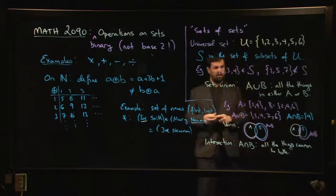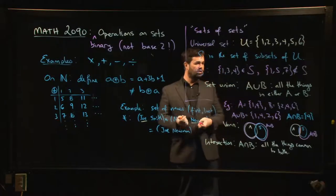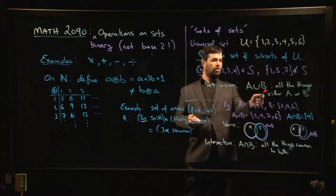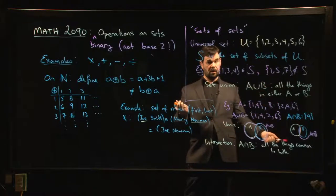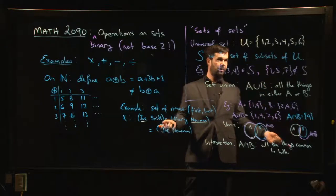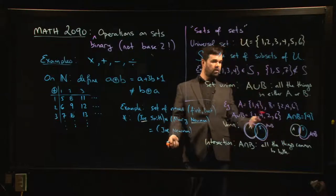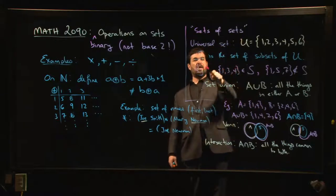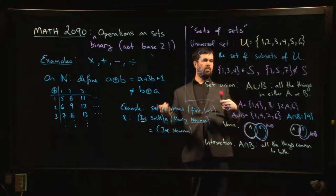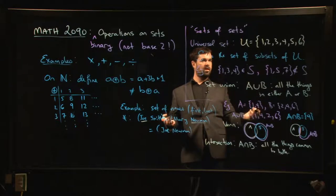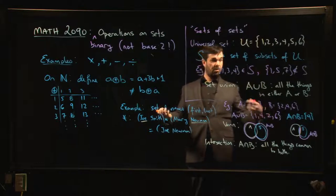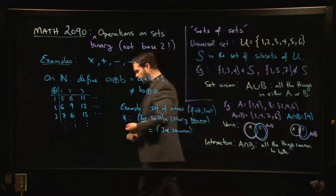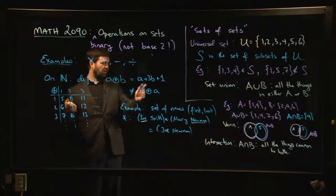So these are also binary operations in the sense that you take two things as an input - in this case the two things are sets - and you get another thing as an output, in this case another set. And you'll notice if you're doing unions and intersections and you're working in this kind of scenario where you're working with subsets of some universal set, these operations stay inside the set. So this set of subsets is closed under both of these operations, union and intersection.